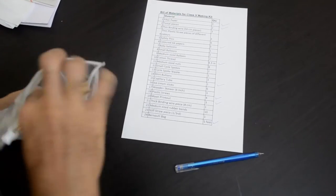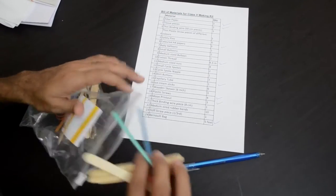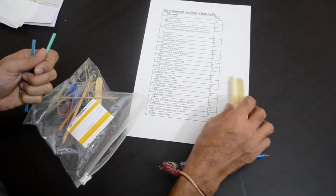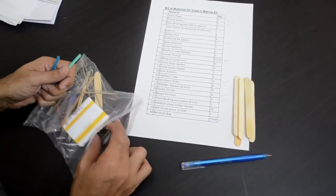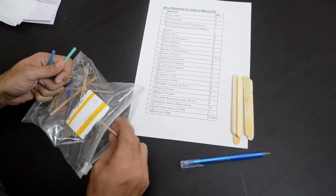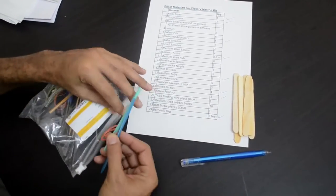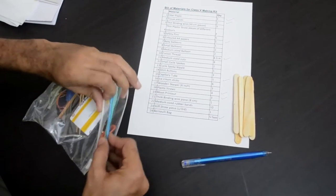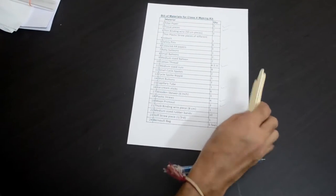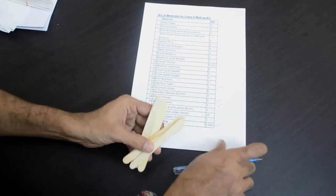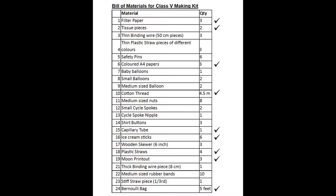Then we have a bunch of ice cream sticks kept inside. As you can see when I am trying to take it out many other things are coming out. Please be careful that you don't drop any item. Take out one item at a time so that you identify the item. There are 6 ice cream sticks. That is item number 16 in our bill of materials, 6 ice cream sticks.